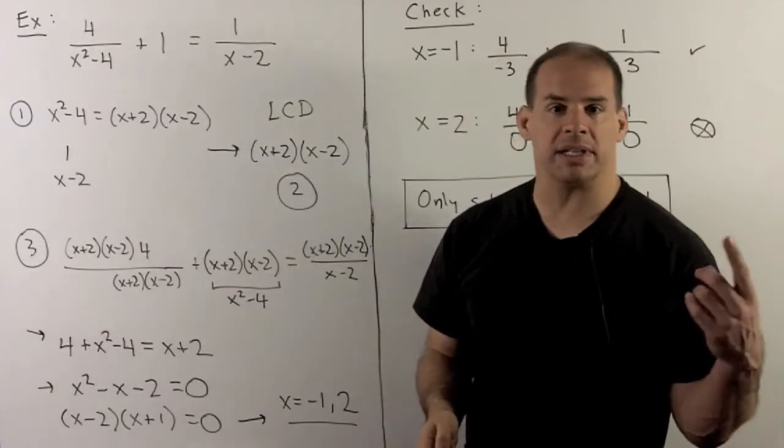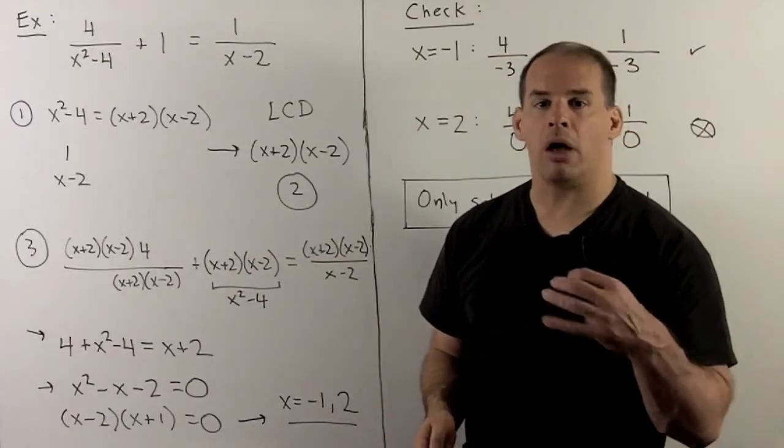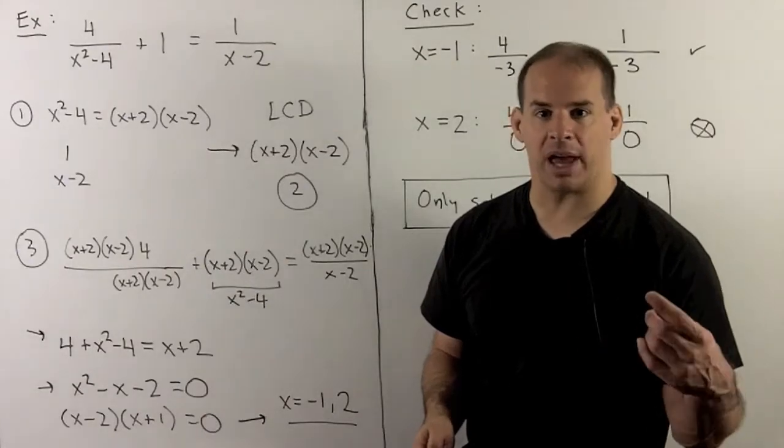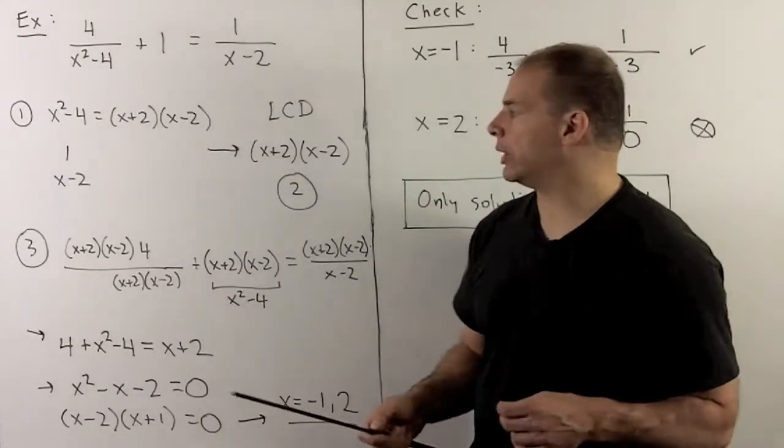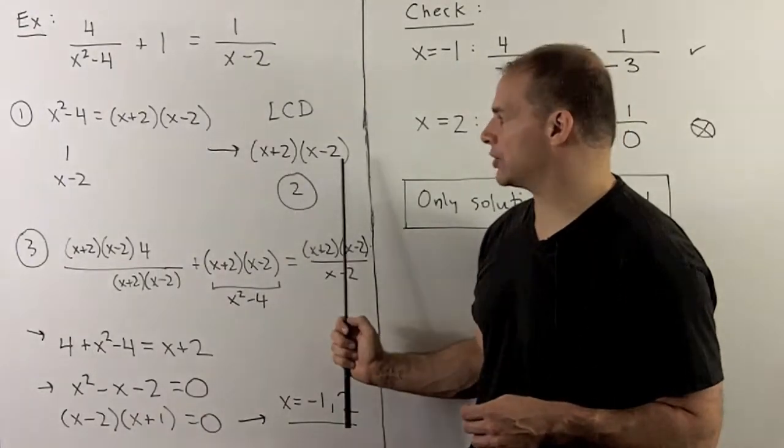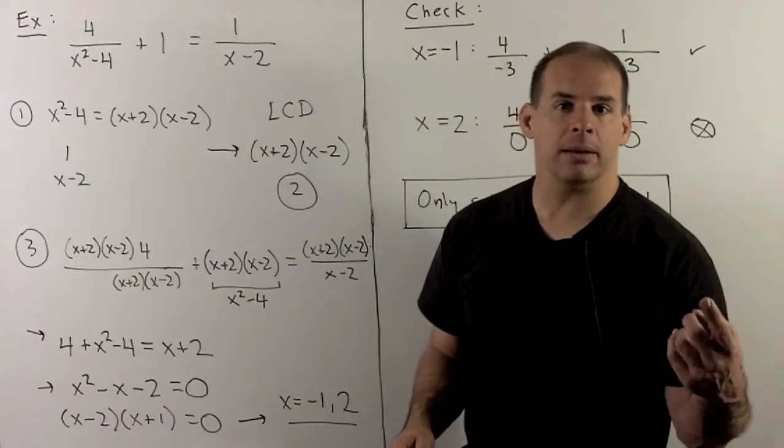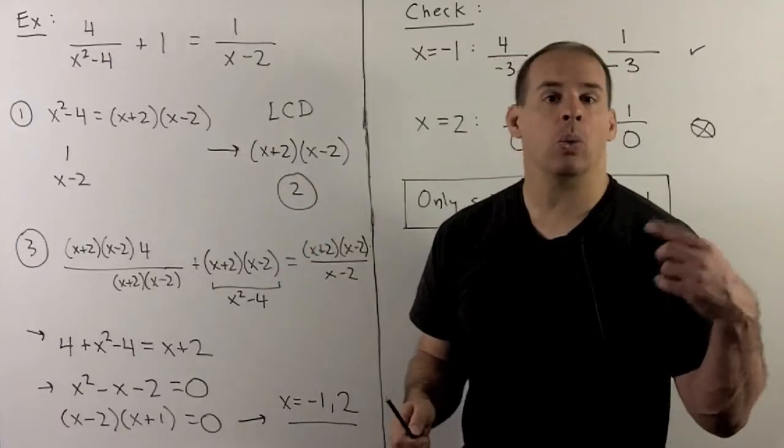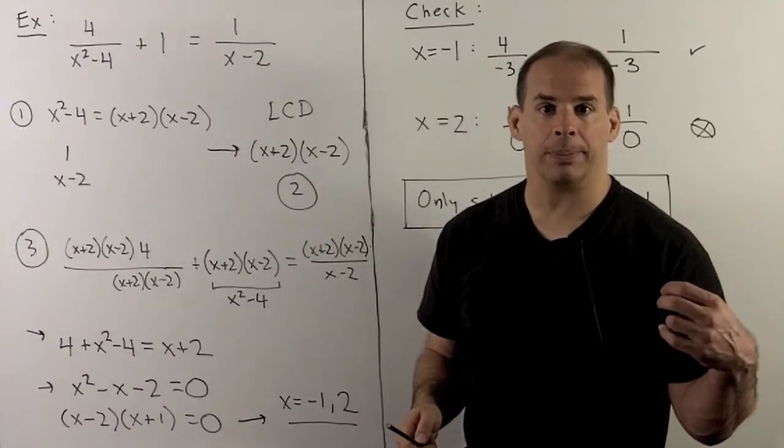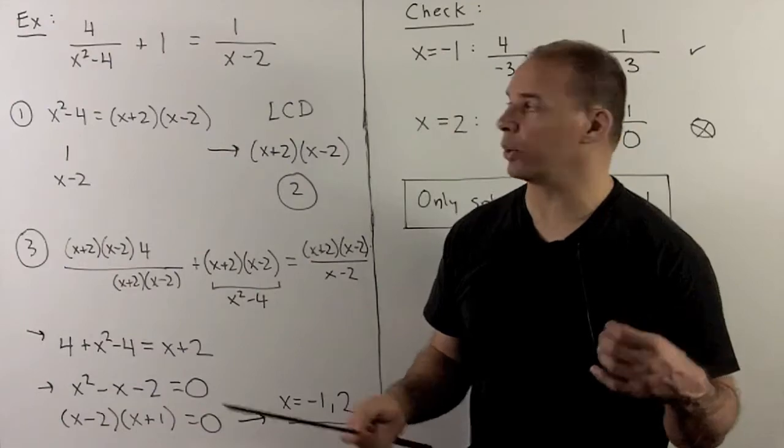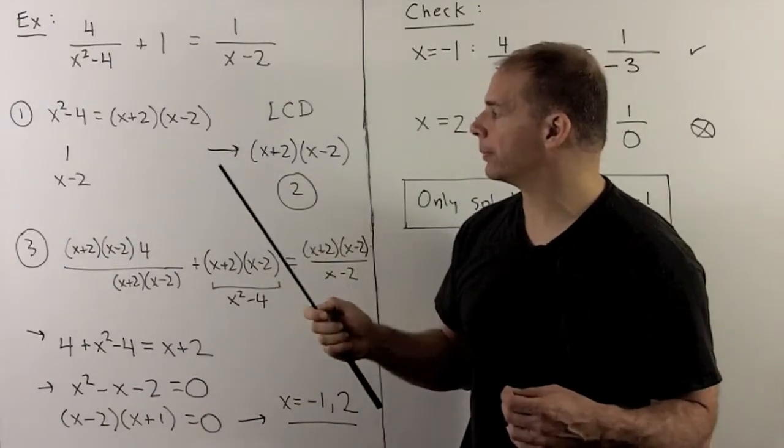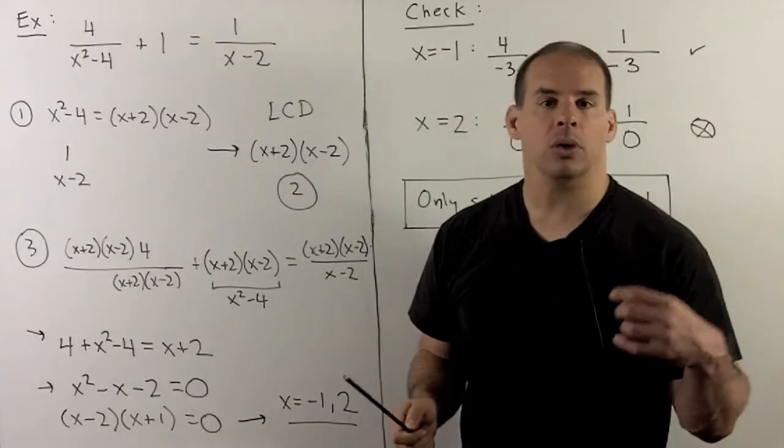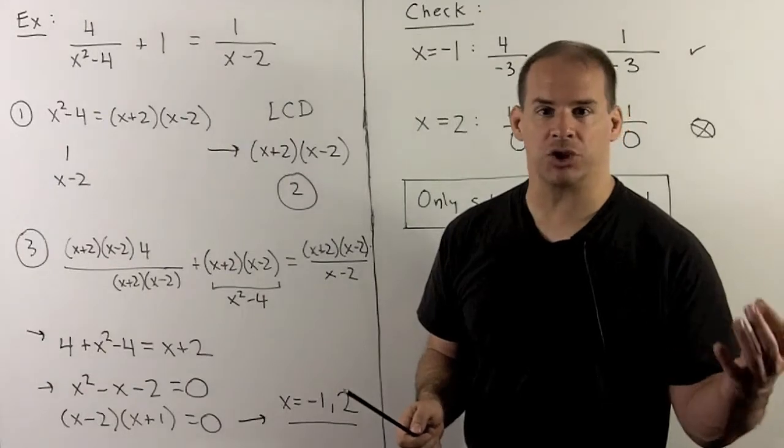For the least common denominator, we use all factors with their highest exponents. So here, I'm only going to need x plus 2, x minus 2. Again, this is a little too much work. You could just look at the equation and ask yourself: what do I need to clear each denominator? It'll be x plus 2, x minus 2, looking at the first term. We apply x plus 2, x minus 2 to each term.